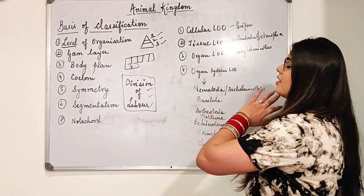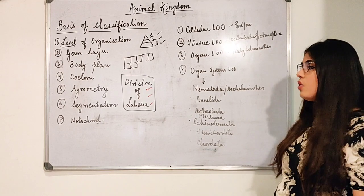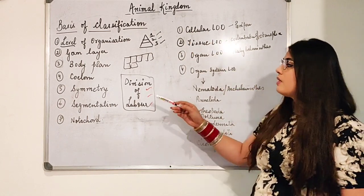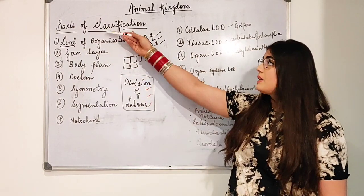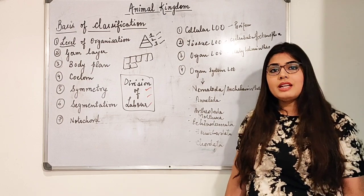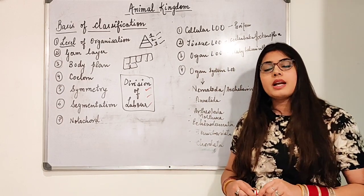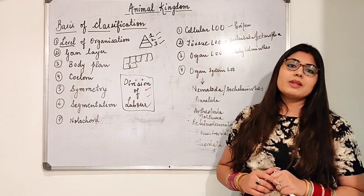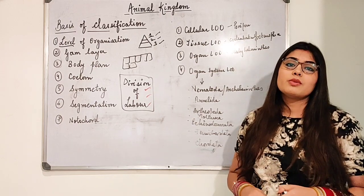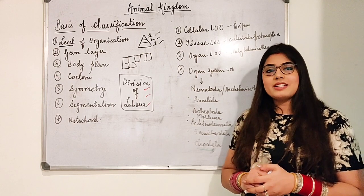This is the level of organization — very simple. In the next video we will cover germ layers, body plan, coelom, symmetry, and segmentation. You need to memorize these levels, understand division of labor, and understand on what basis we classify organisms. Stay tuned for video number three. If you have any doubts, put them in the comment section. Please subscribe, like, and share the video with your friends. I'll see you in the next video — until then, take care!